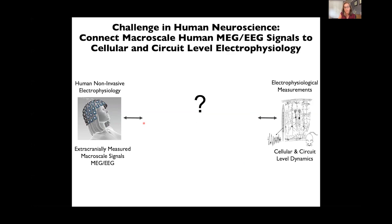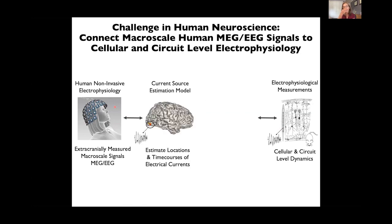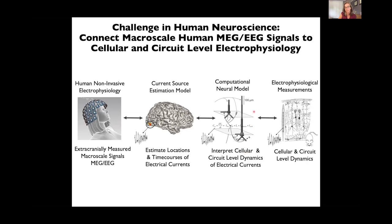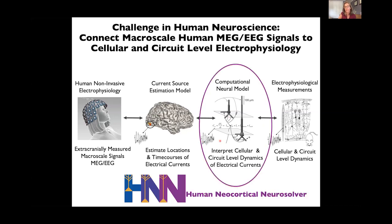There are two types of modeling needed to get from extracranially measured signals to the intracranial circuits. The first is current source estimation or inverse modeling, which links sensor data to the location and time course of the primary electrical currents creating those signals. From there, we need to connect these currents to cellular and circuit microscale activity — the perfect job for computational neural modeling, which has specificity at both the microcircuit and macroscale recording levels. This is the foundation of our Human Neocortical Neural Solver, which we've turned into a user-friendly software tool for the community to develop and test predictions on the neural origin of their MEG or EEG data.